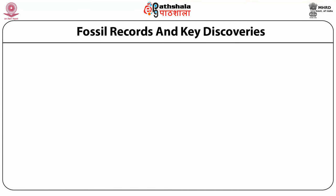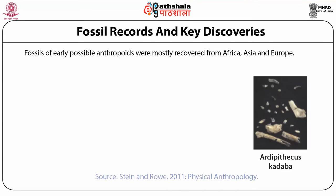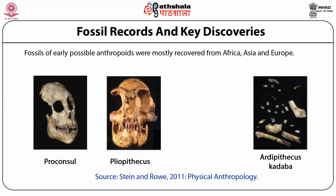Now let's review the fossil record and key discoveries. Fossils of early possible anthropoids were mostly recovered from Africa, Asia, and Europe. One of the richest sites that has yielded late Eocene and early Oligocene anthropoid fossils is Fayum in Egypt. The Miocene era fossils include Triopithecus, Pliopithecus, Proconsul, and Sivapithecus.